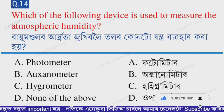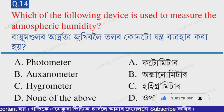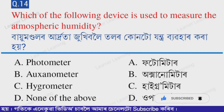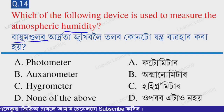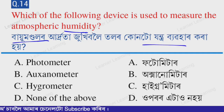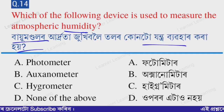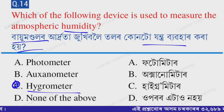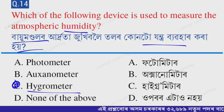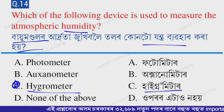Next question: Which of the following devices is used to measure atmospheric humidity? The correct option is option C — hygrometer. A hygrometer is used to measure atmospheric humidity.